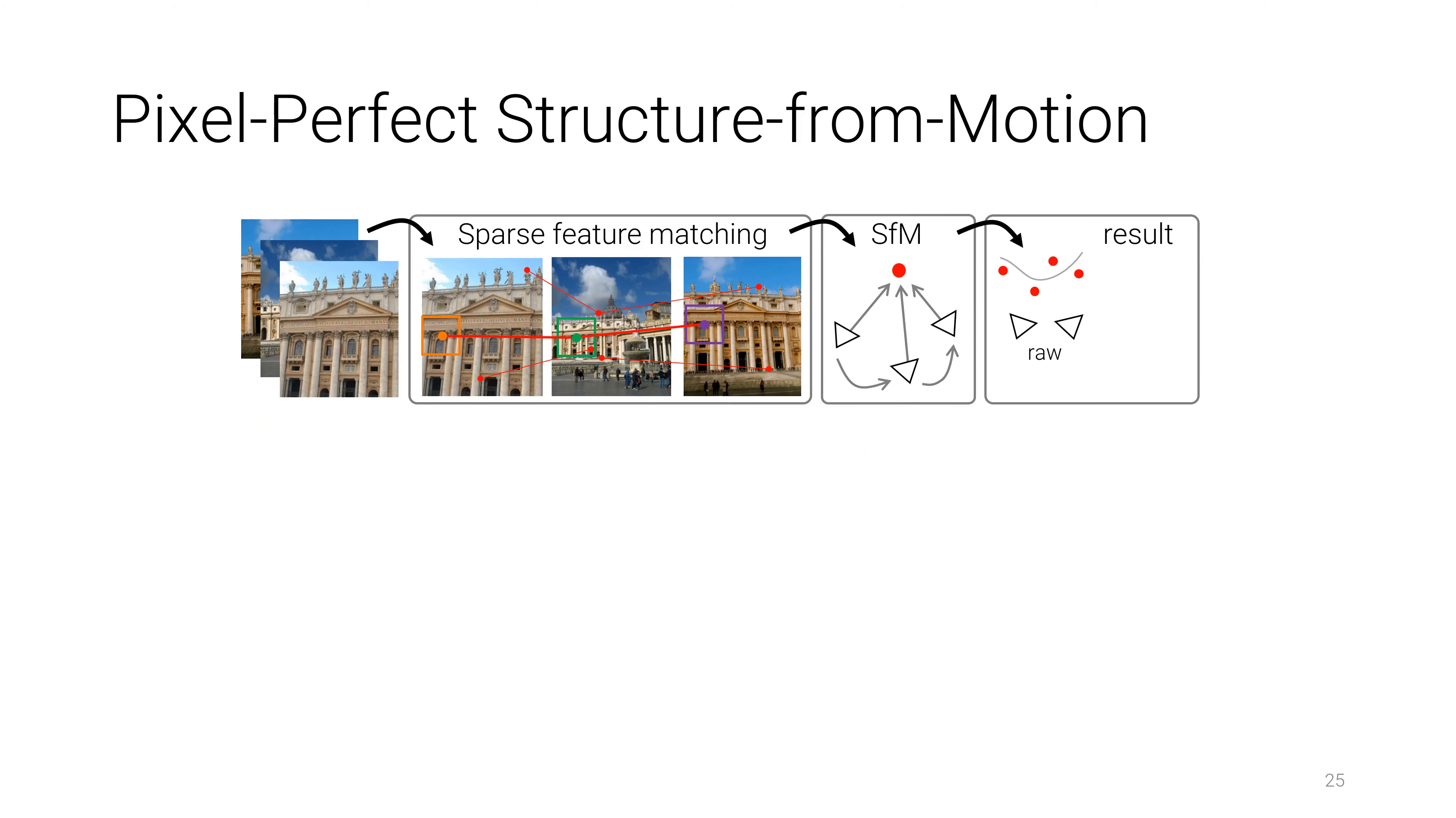We propose pixel-perfect structure from motion, which improves both initial detections prior to SFM and the final 3D scene. We start by feeding each image through a convolutional neural network to obtain dense, high-dimensional feature maps.